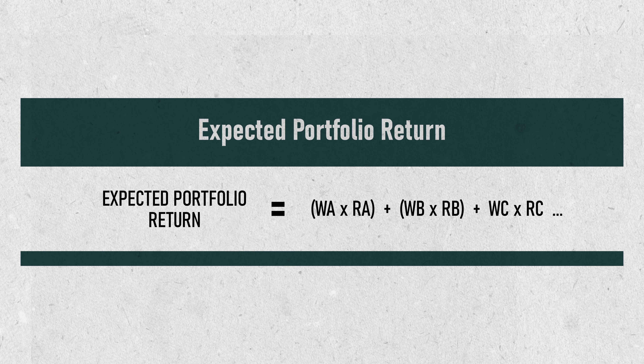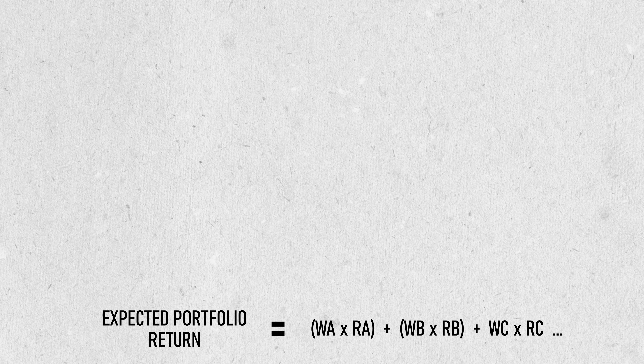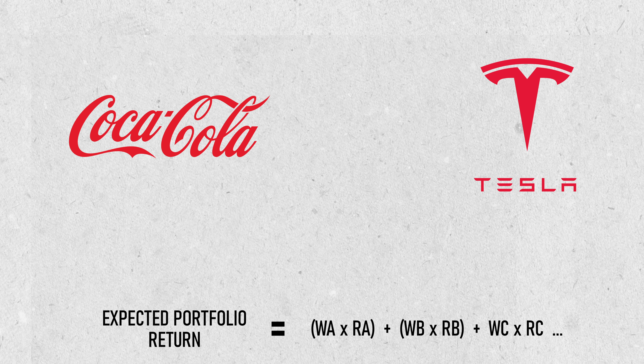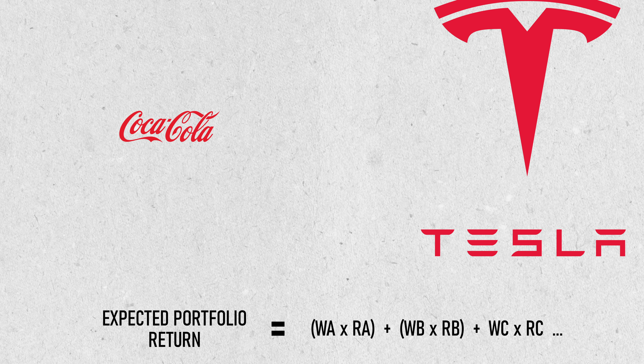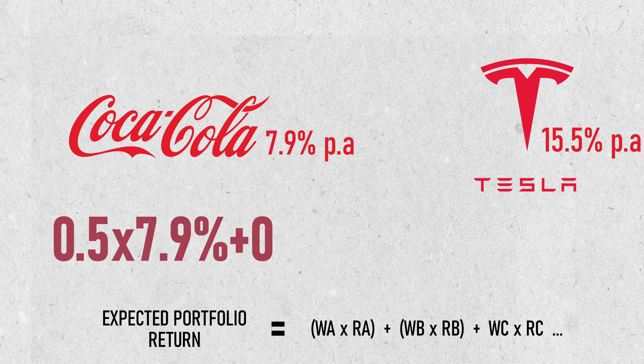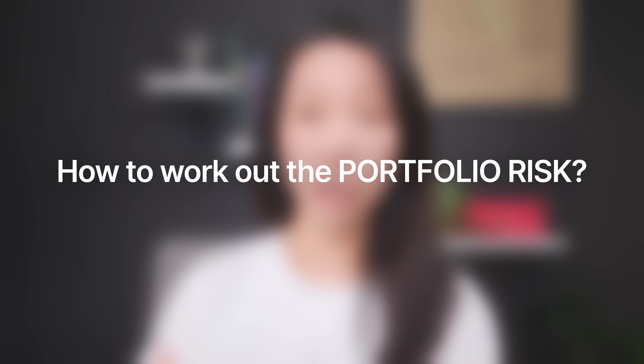Under the model, the portfolio return is the proportion-weighted combination of each asset's returns. For my two-stock portfolio with Coca-Cola and Tesla, if I give it a 50-50 equal weight, it wouldn't be very hard to work out the expected return for the portfolio — 11.7%. Now, how do we work out the portfolio risk, or how much the portfolio's return might bounce around?